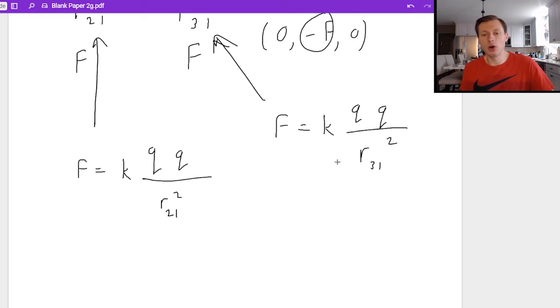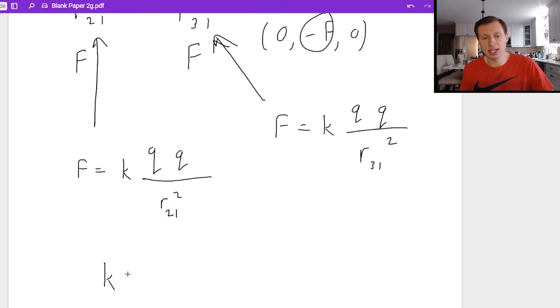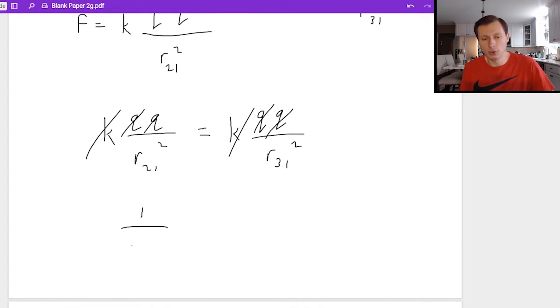And since we said these were all equal, I'm going to set both of these equal to each other. I'm going to say k q q over r21 squared equals k q q over r31 squared. The nice thing here is that the k's cancel, and both q's cancel. However, the radiuses don't cancel, because they're different symbols. But what I'm left with is one over r21 squared equals one over r31 squared.